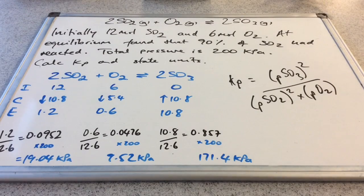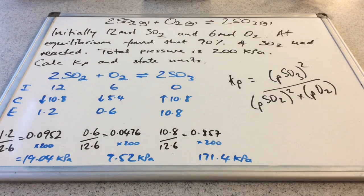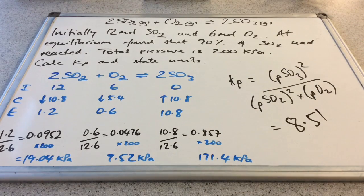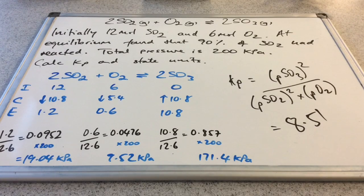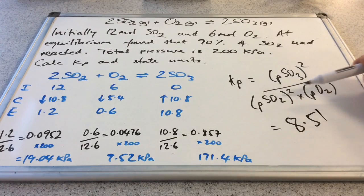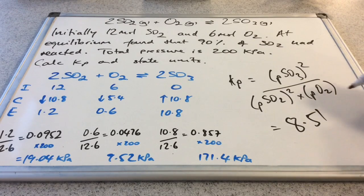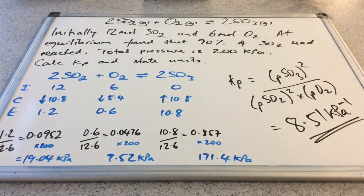We're nearly done now. We write the expression for Kp and substitute our partial pressures in, giving a numerical value for Kp of 8.51. For the units: we've got kilopascals squared on the top and kilopascals cubed on the bottom, leaving kilopascals to the negative one. So Kp = 8.51 kPa⁻¹. If you got that right without any help at all, well done — I think you can pretty much do anything.